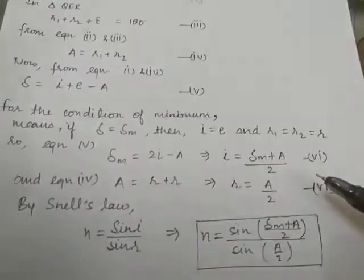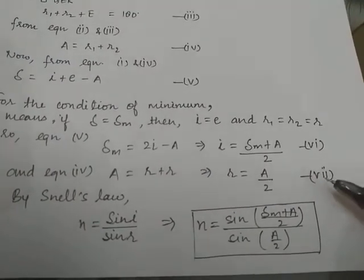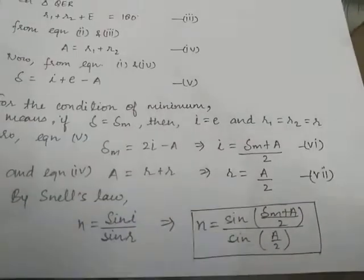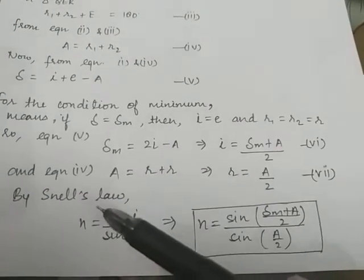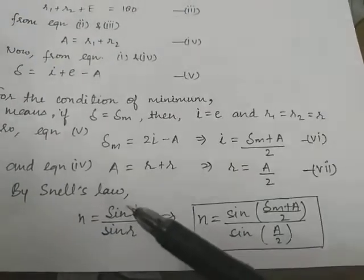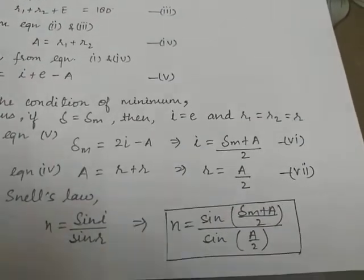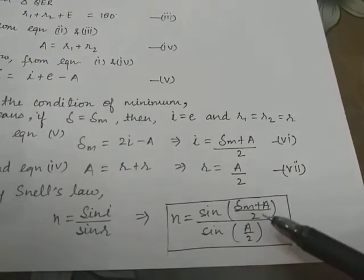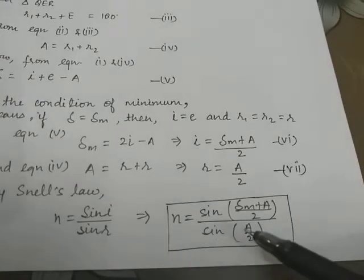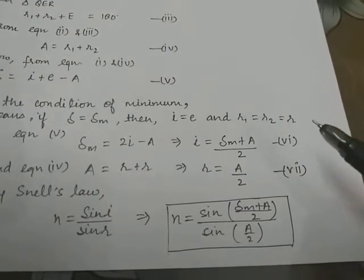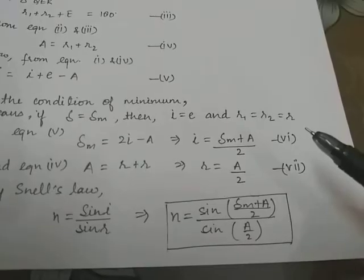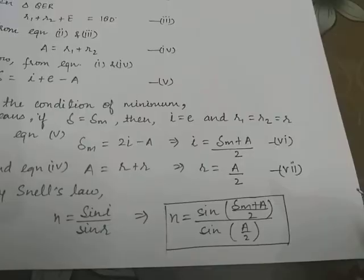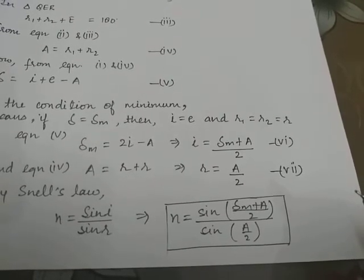From equations six and seven we have determined the values of i and r, so we can now apply Snell's law: n equals sin(i) divided by sin(r). Placing the values of i and r, it becomes n equals sin((δm plus A) divided by 2) divided by sin(A divided by 2). This is the expression for the refractive index of a prism, assuming the outer medium is air.